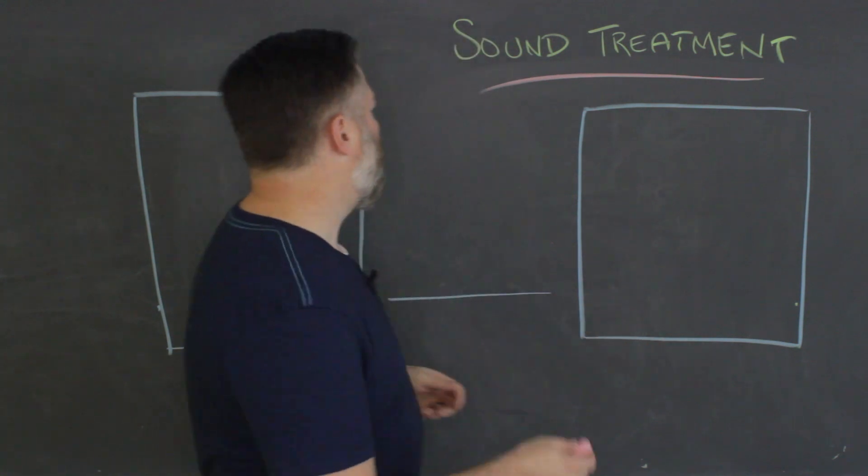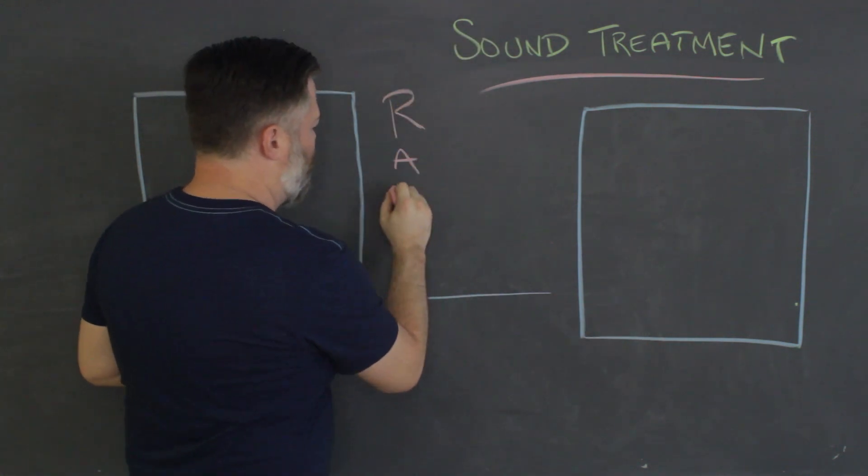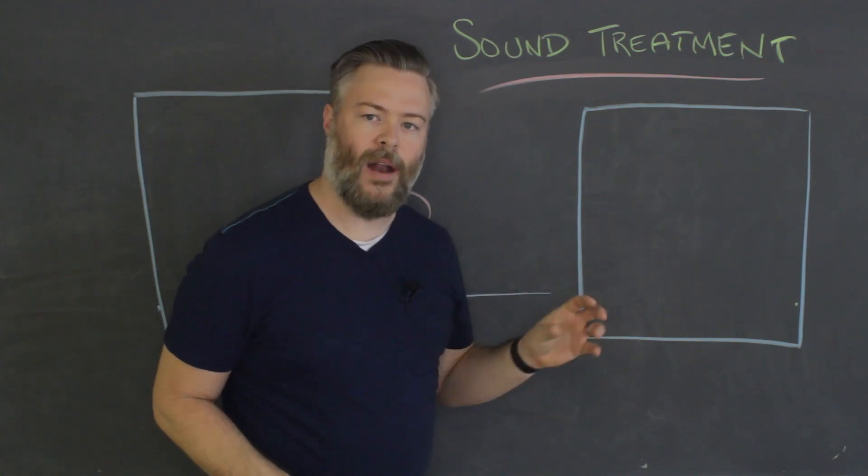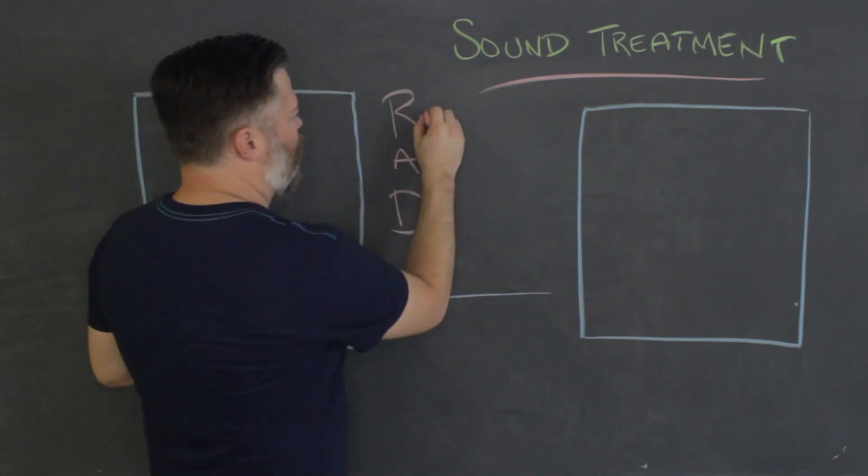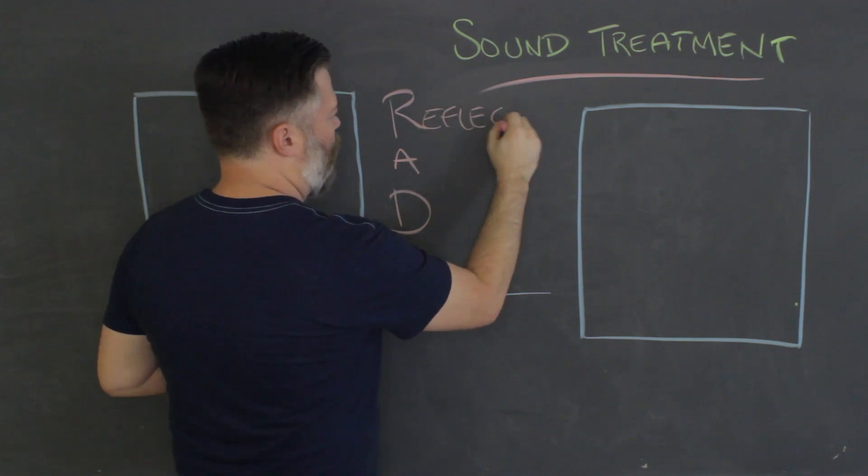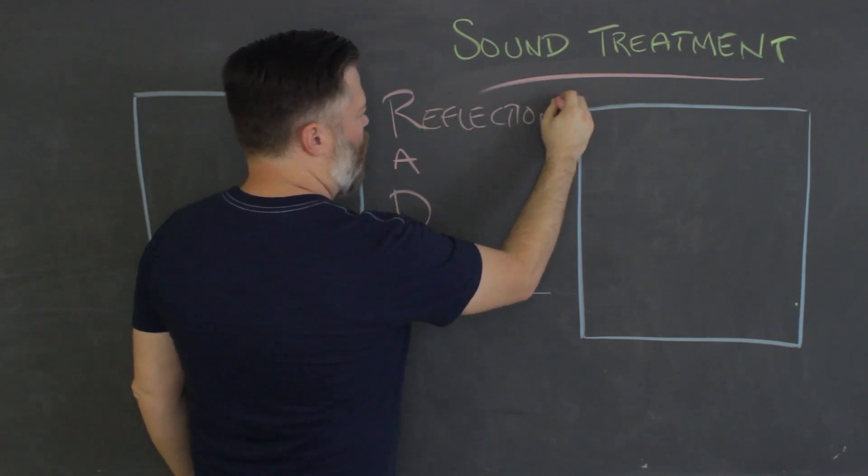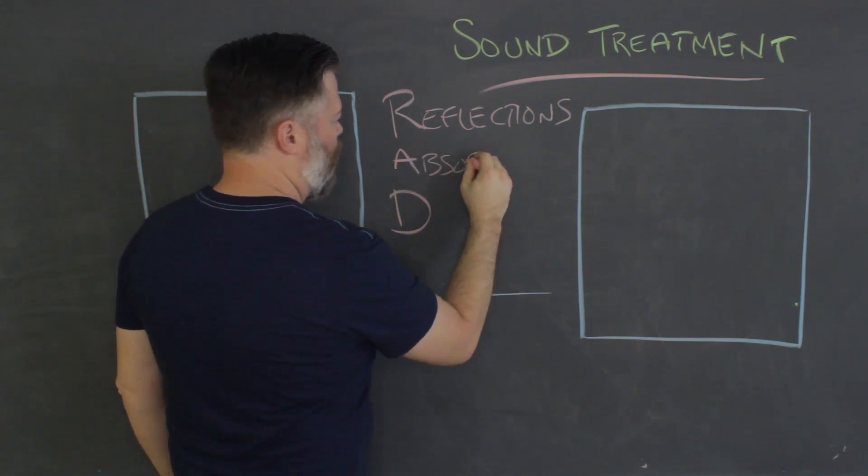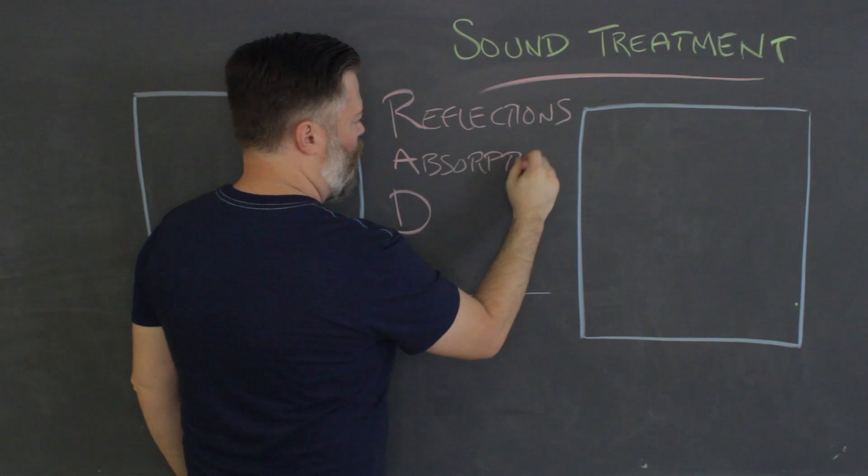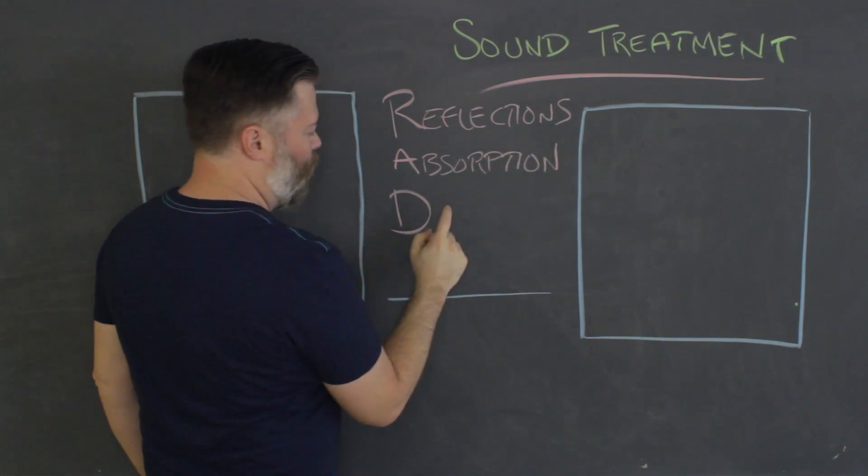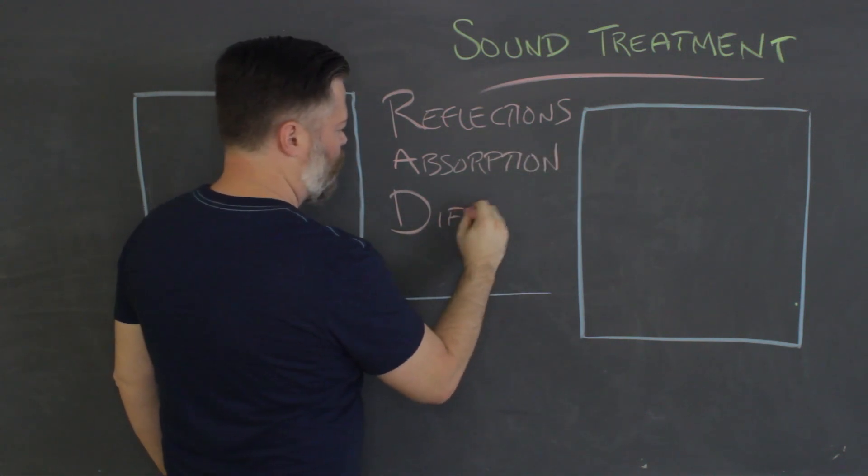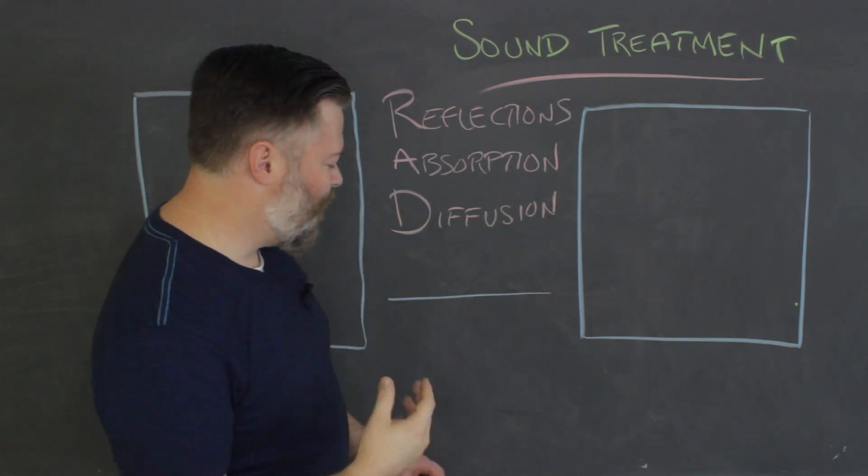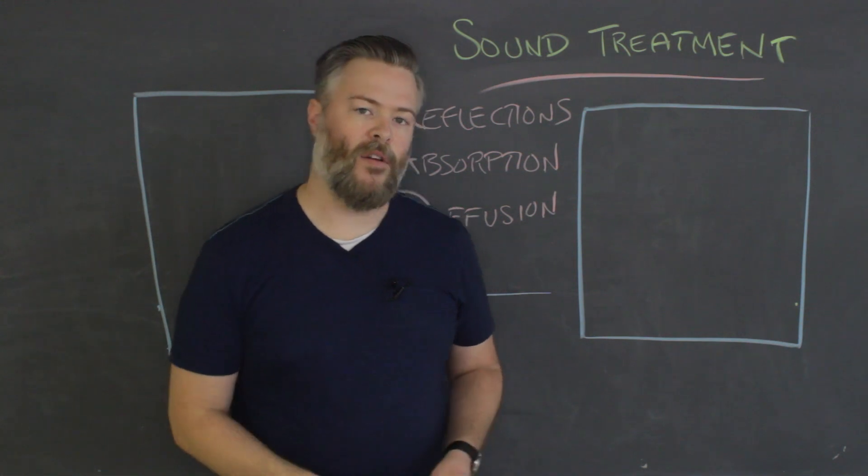We want our room to sound rad, okay? This will be an easy way to remember the things we're playing with in a room to try to make it sound better. We're going to deal with reflections, absorption, and diffusion. Those are the basic things we are going to deal with in terms of trying to make a room sound better.